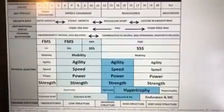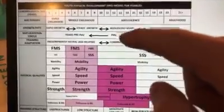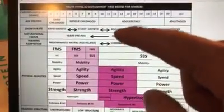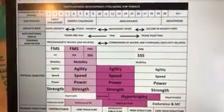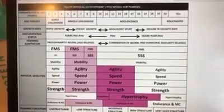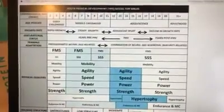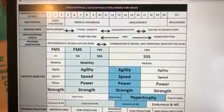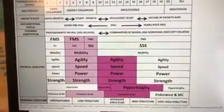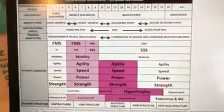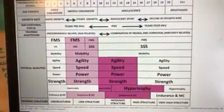Additionally, there is also a female model. The primary difference is when the onset of peak height velocity and adolescent growth spurt occurs — it's different between the two. Around about the age of 12, give or take, for a female athlete, compared to around the age of 13 to 14 for a male athlete. A lot of those elements are very similar across into the female athletes: the focus on fundamental movement skills, sport-specific skills, mobility, agility, speed, power, and strength.